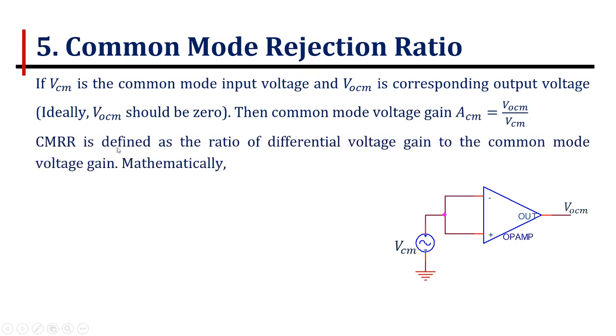Common mode rejection ratio is defined as the ratio of the differential voltage gain to the common mode voltage gain. CMRR equals AD upon ACM, where AD equals V output divided by V plus minus V minus, that is the differential voltage gain.